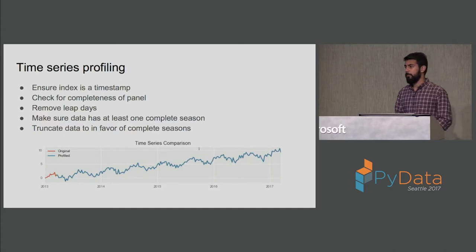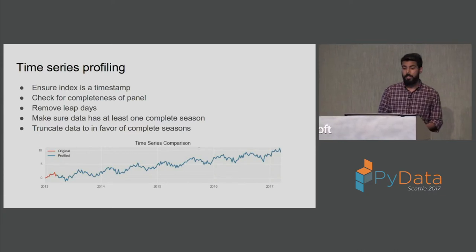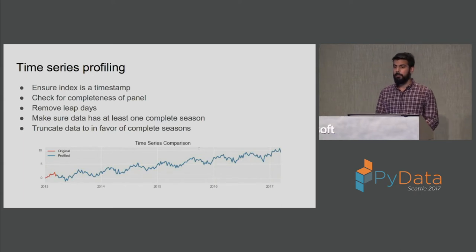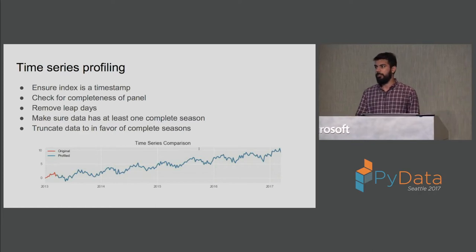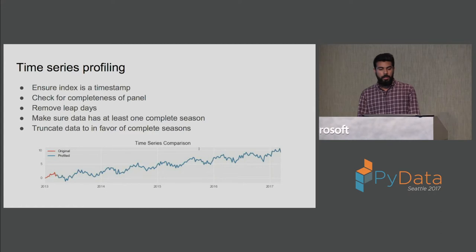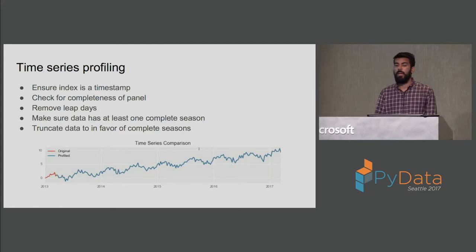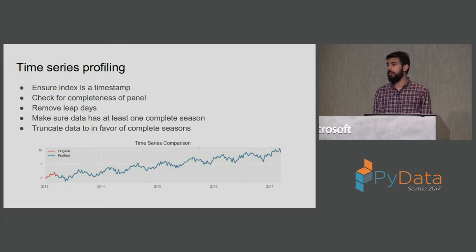The first preprocessing step is to profile the data: ensure the time series index is of type timestamp, check for completeness of the panel, and fill null values on days where we don't see transactions. If dealing with daily data, whose frequency is 365, remove leap days. If the time series has seasonality, make sure the data has at least one complete season before forecasting, and truncate any incomplete season from the data.